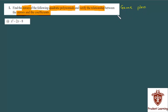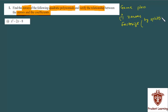Sabse pehla kaam: jab kabhi bhi aapko zeros nikalna ho, toh zeros nikalne ke liye aapko given polynomial ko factorize karna chahiye. Factorize kaise karenge? By splitting the middle term. By splitting the middle term factorize toh aap kai tarike se kar sakte hain, par middle term ko split karke factorize karna easy padta hai.